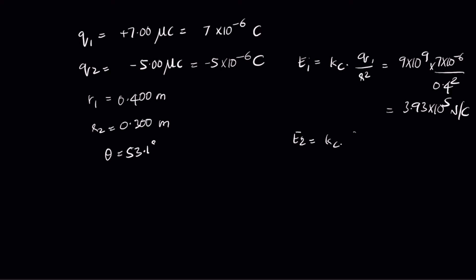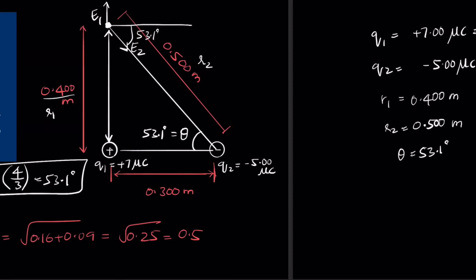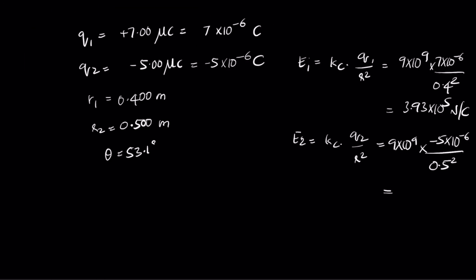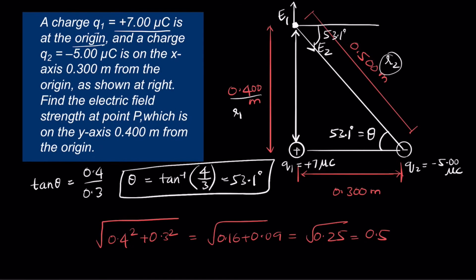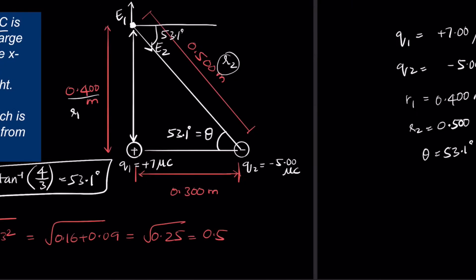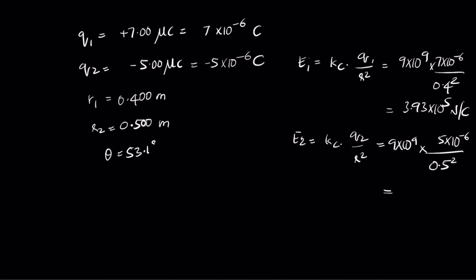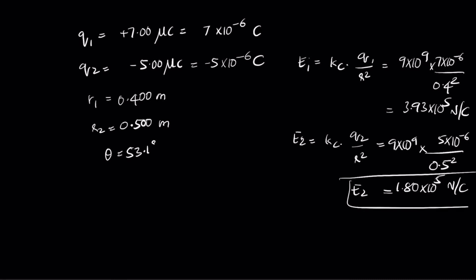E2 = kc·|q2| / r2² = (9×10⁹ × 5×10⁻⁶) / (0.5²). Note that r2 is 0.5 meters, not 0.3. We omit the sign since we've already indicated direction with arrows. This gives E2 = 1.80×10⁵ N/C.